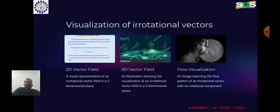Visualization of irrotational vectors in 2D, 3D, and flow visualization. In a 2D vector field, you can create a vector plot where each vector represents the magnitude and direction of the vector field at a specific point. For an irrotational vector field, the vectors should align nicely without any swirling or rotating patterns.